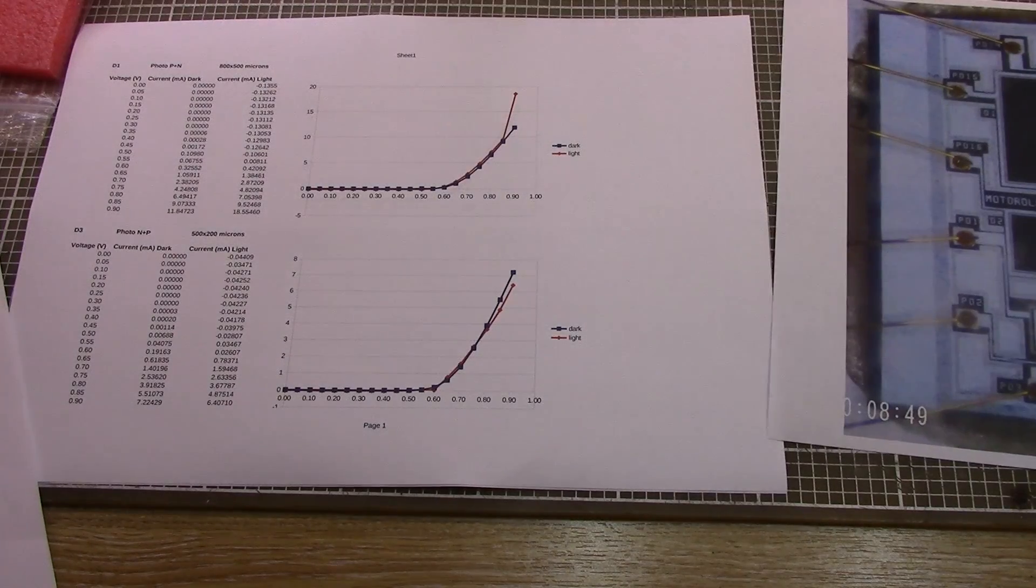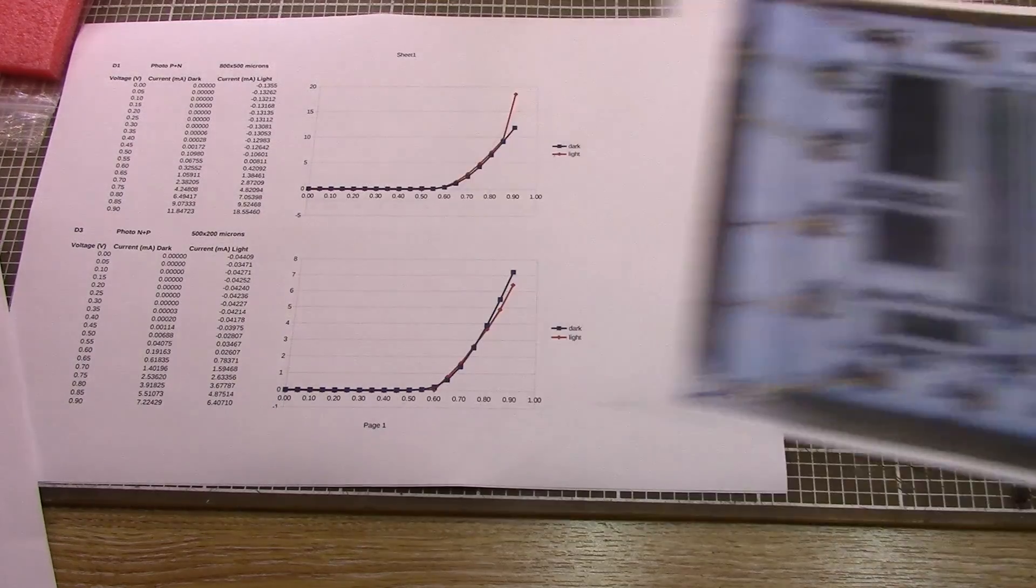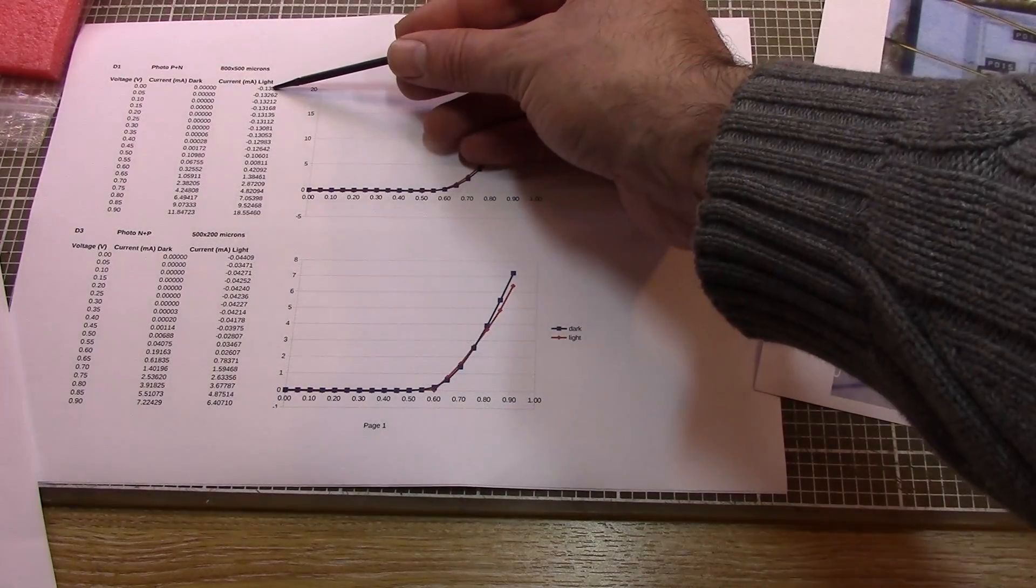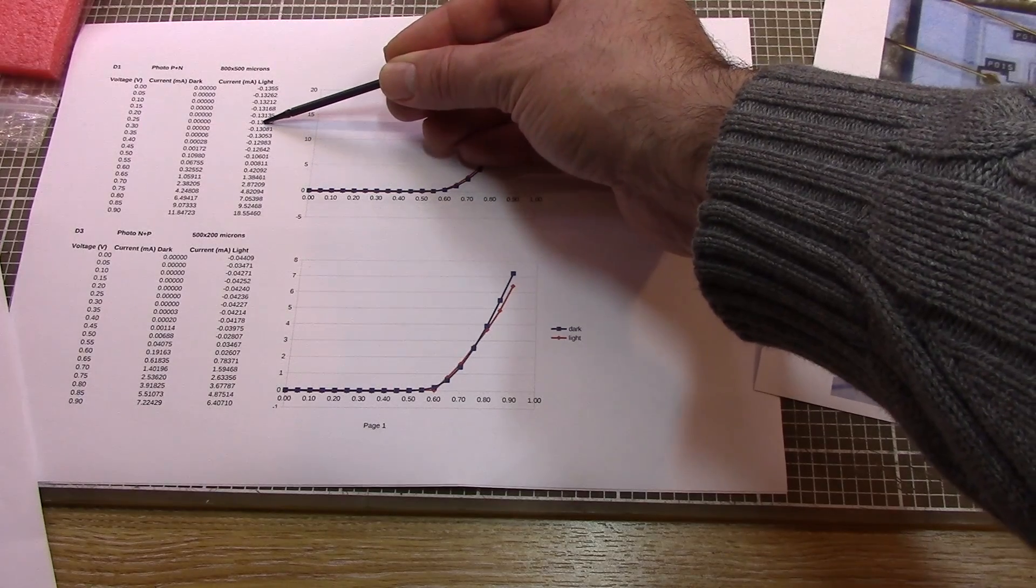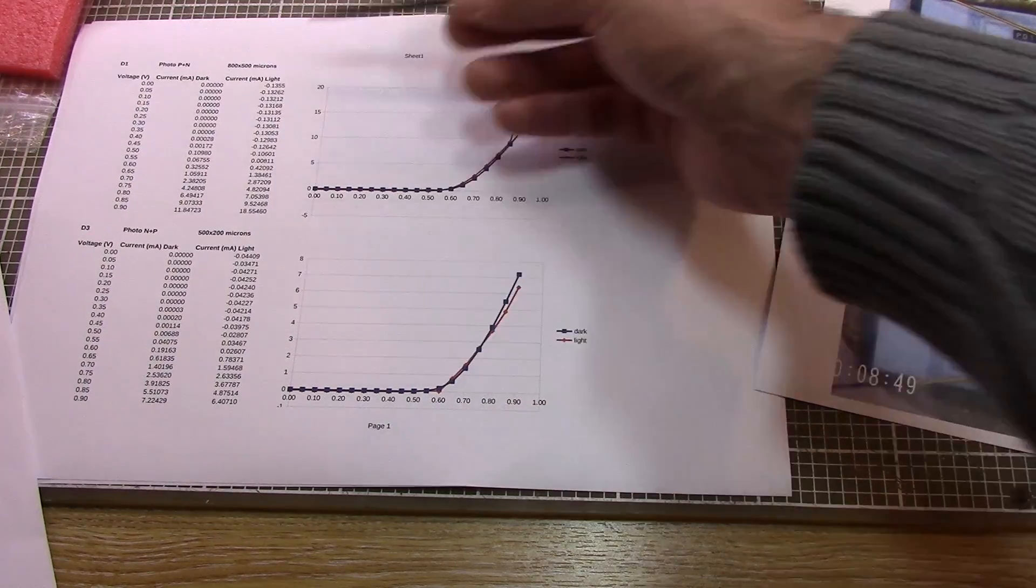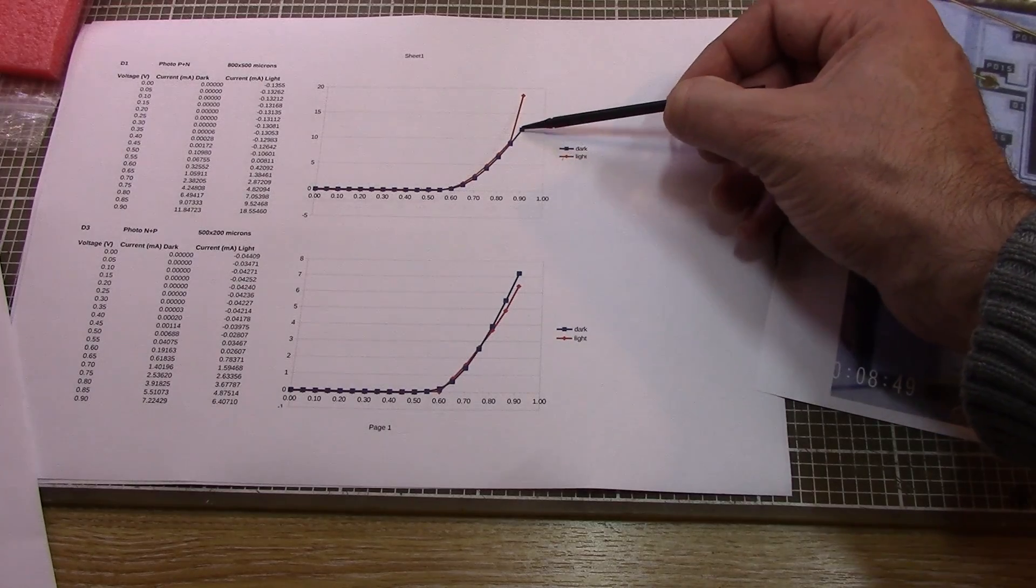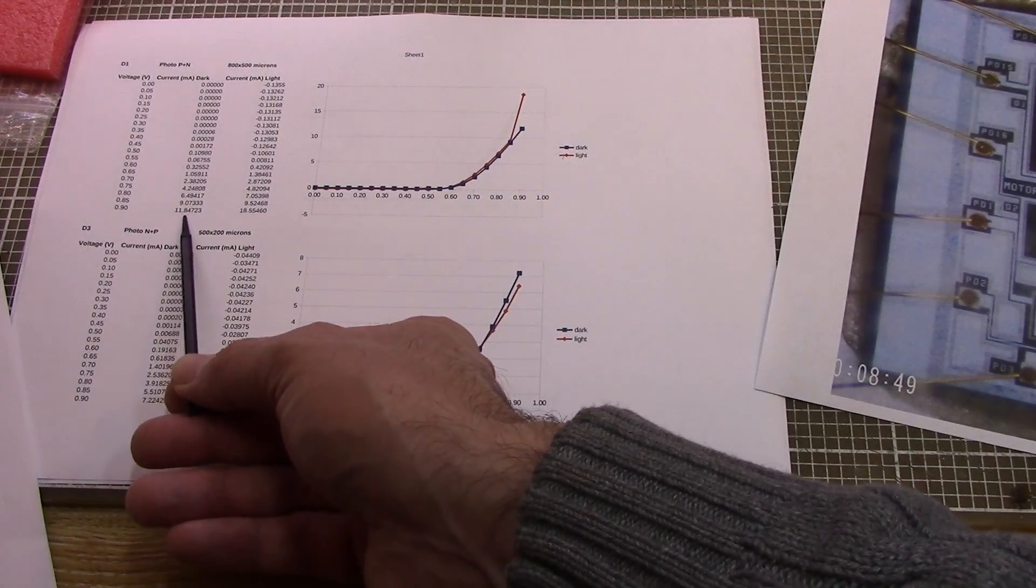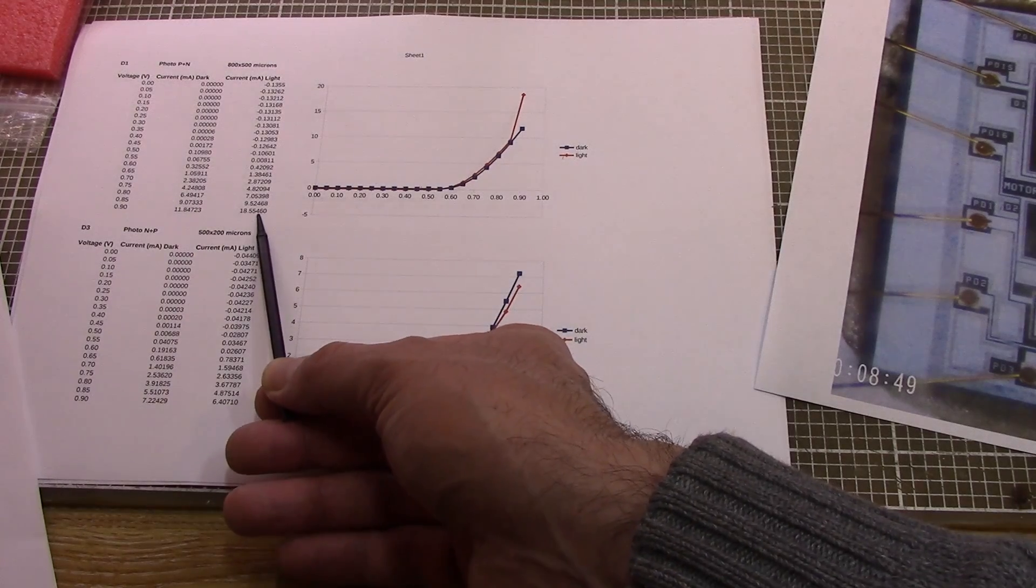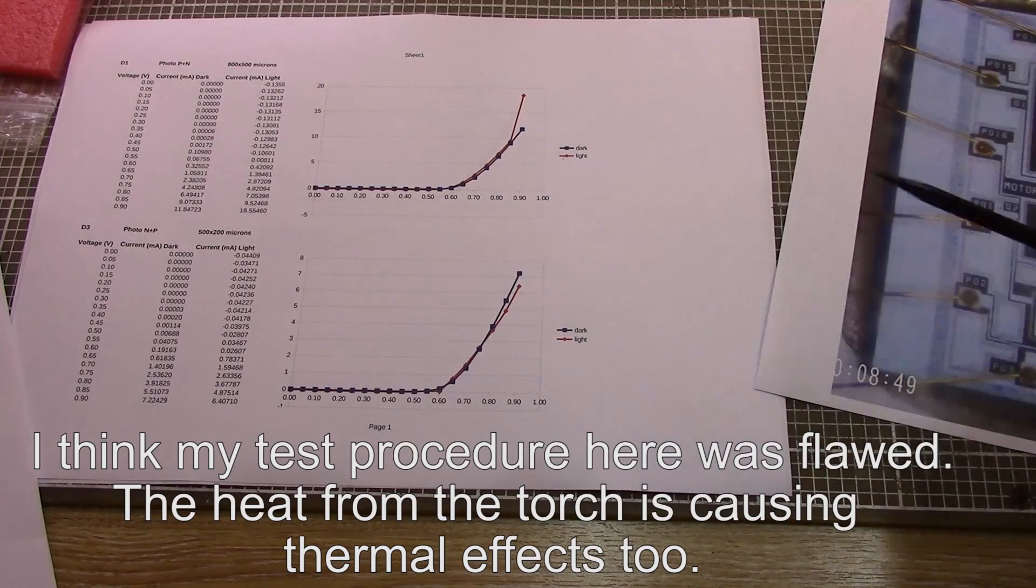Next up we've got diode D1 which was this big one here. Diode D1 is generating a lot more current when it's getting the light shining on it, we're actually up to 0.13 of a milliamp. The current difference between darkness was 11.8 milliamps and in the light of my torch we're up to 18 milliamps. So a very pronounced difference on that particular diode.